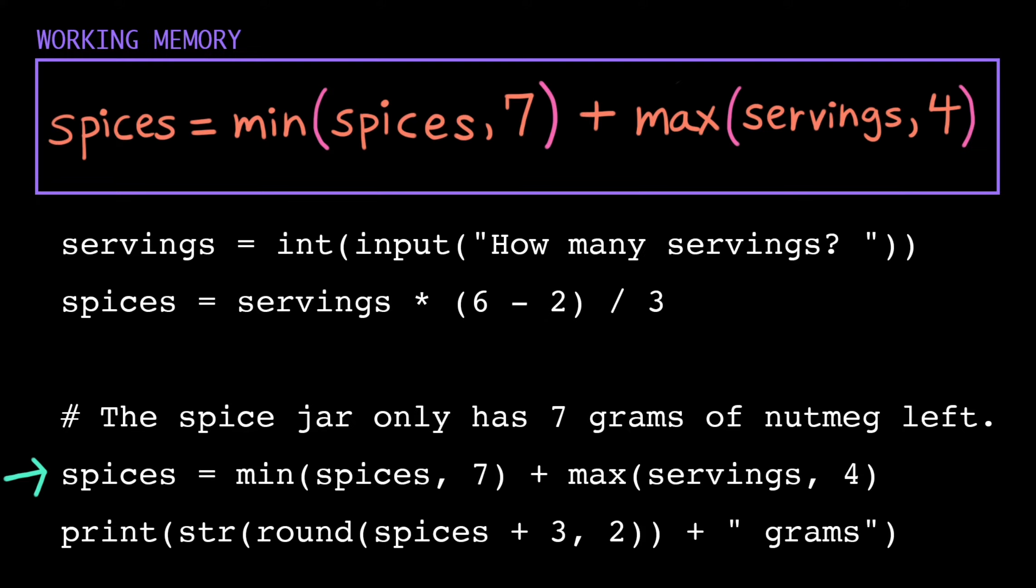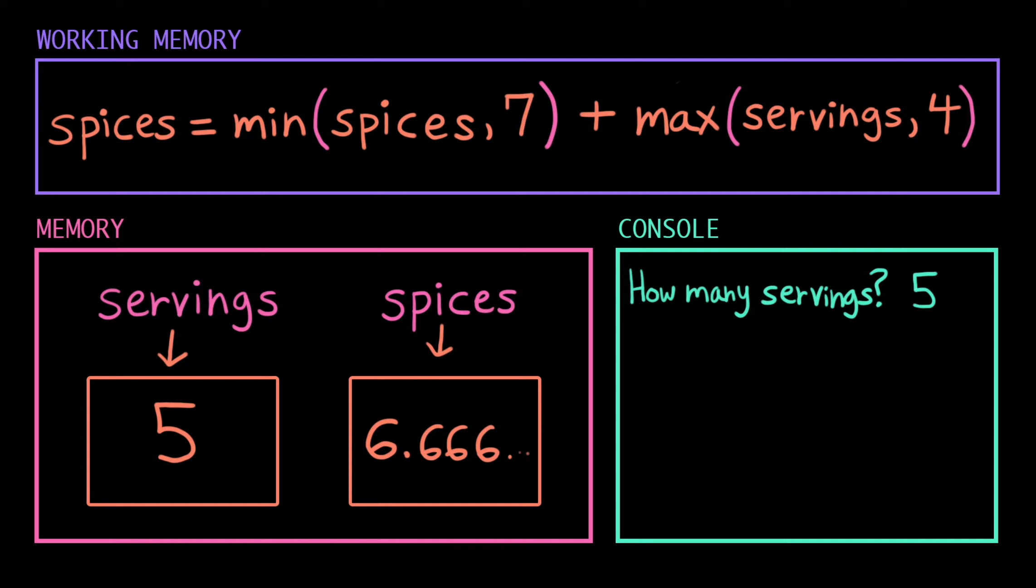Load in that next line, and here we have two sets of parentheses, but those parentheses are at the same level of precedence. They're not one inside of the other. So that means we're just going to evaluate them left to right. Starting with those left parentheses, the computer is going to grab that value of spices from its memory, substitute it in.